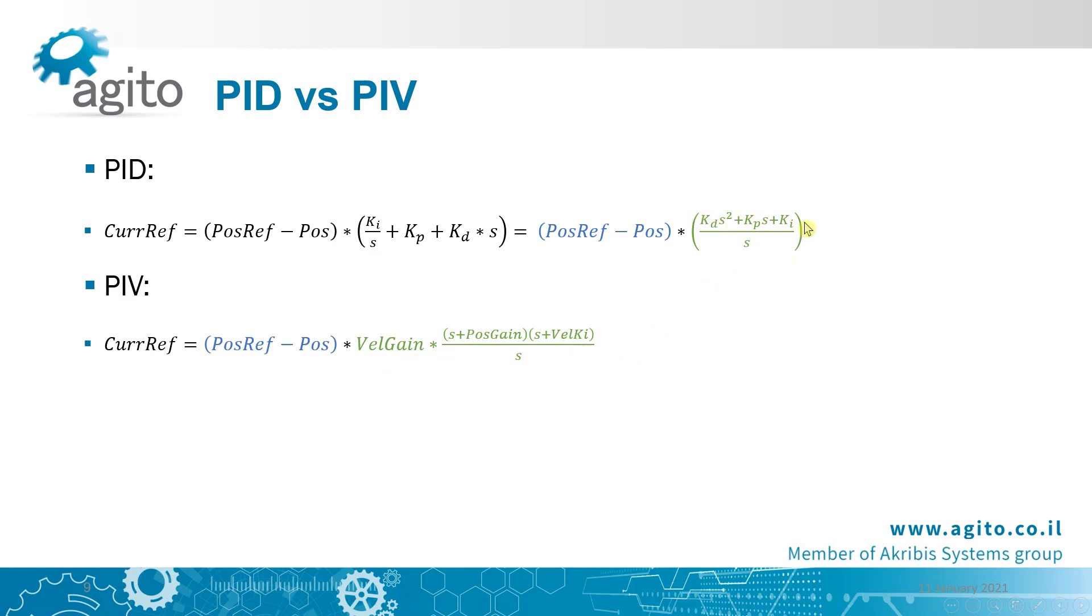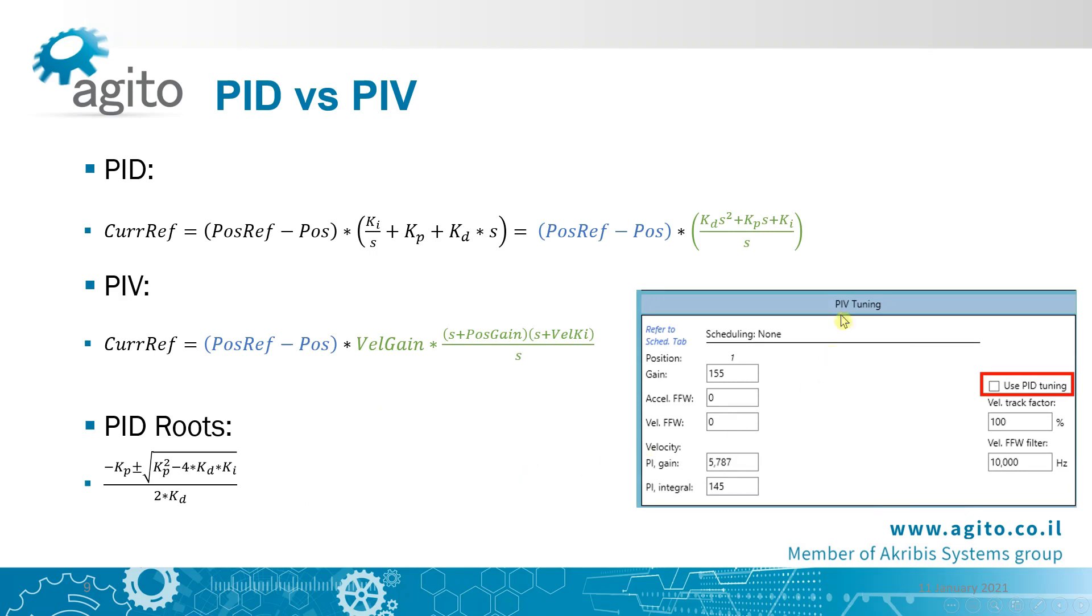If we solve the PID's second order polynomial, and equate the roots to the PIV roots, we'll be able to find equivalent controllers in PIV and PID forms, as long as the PID roots aren't complex. And if you wish to use PID tuning parameters, you can also do that in our tuning page.